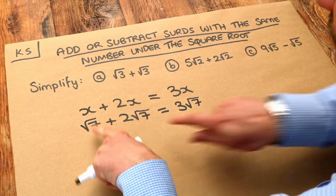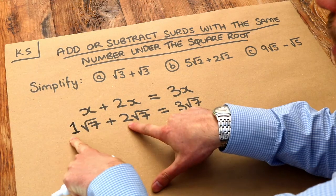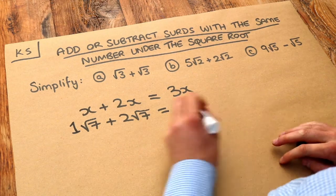So if we add surds and you have the same number in the square root, you can just add these numbers on the front. So 1 plus 2 is 3, so we have three lots of root 7.